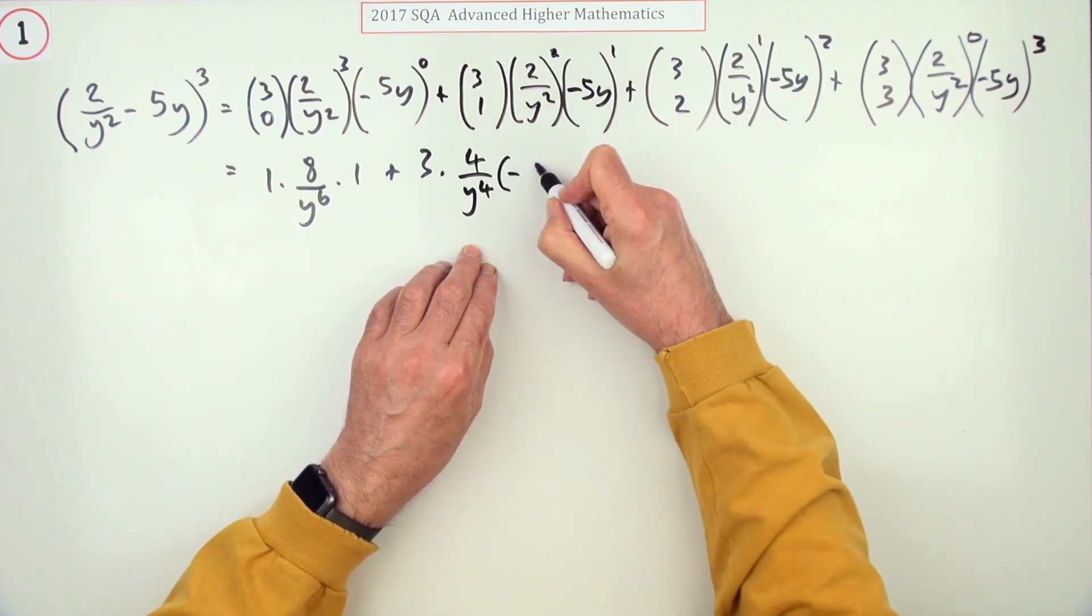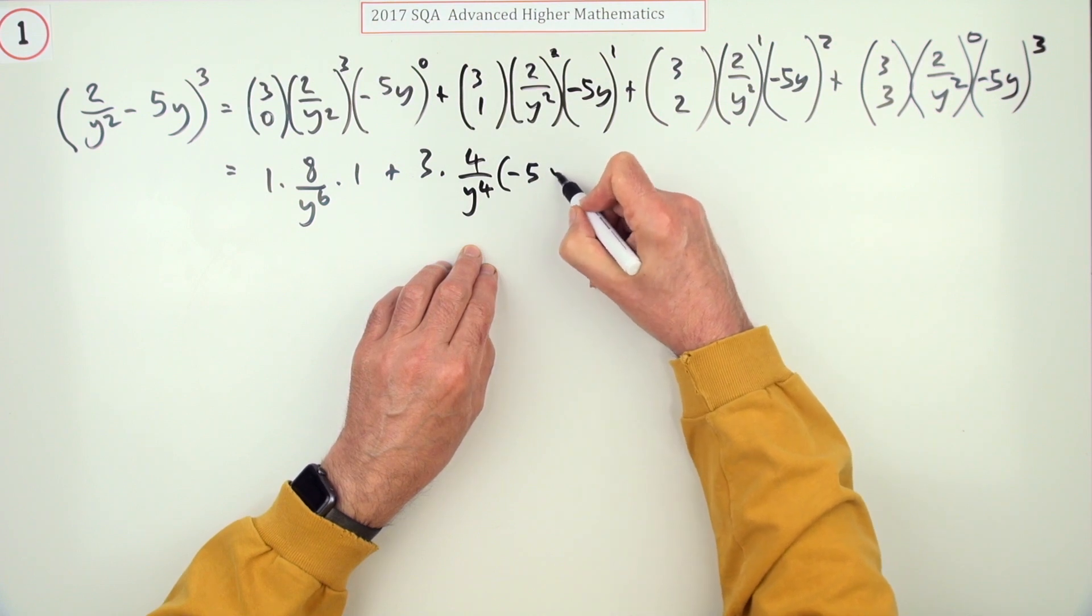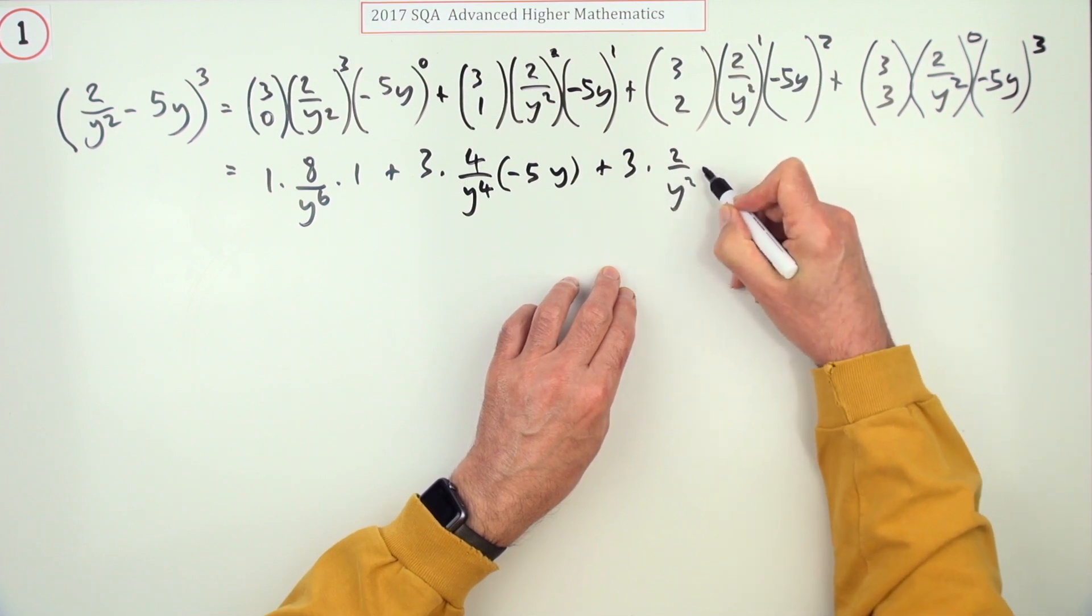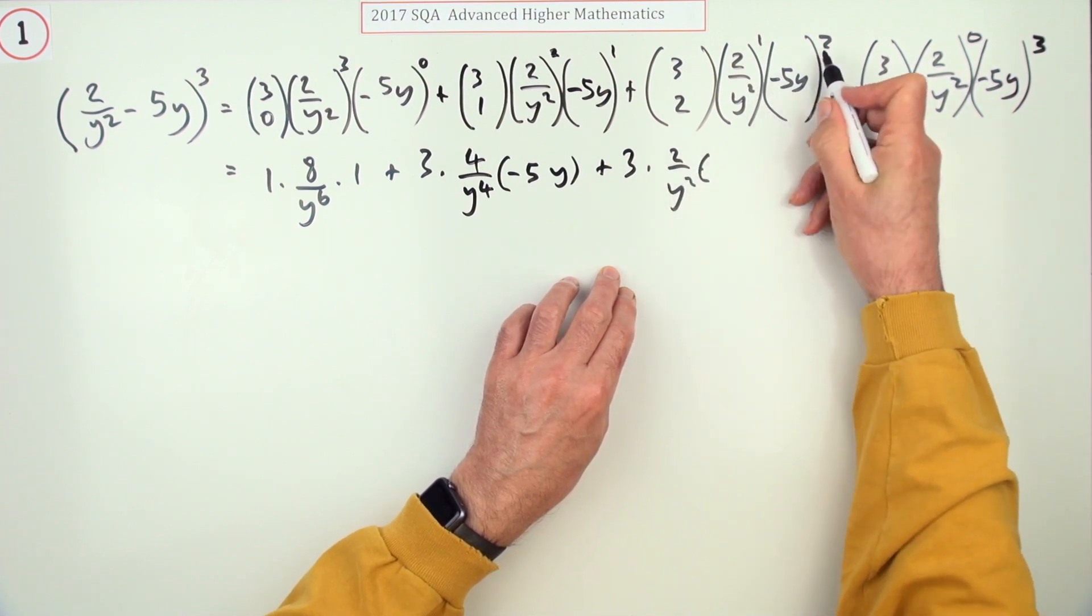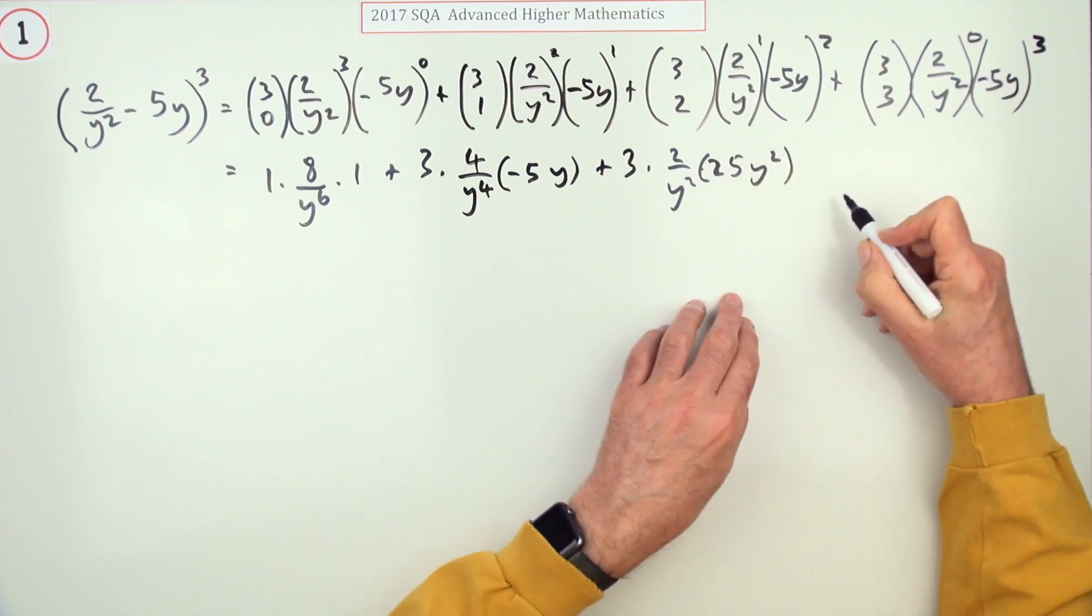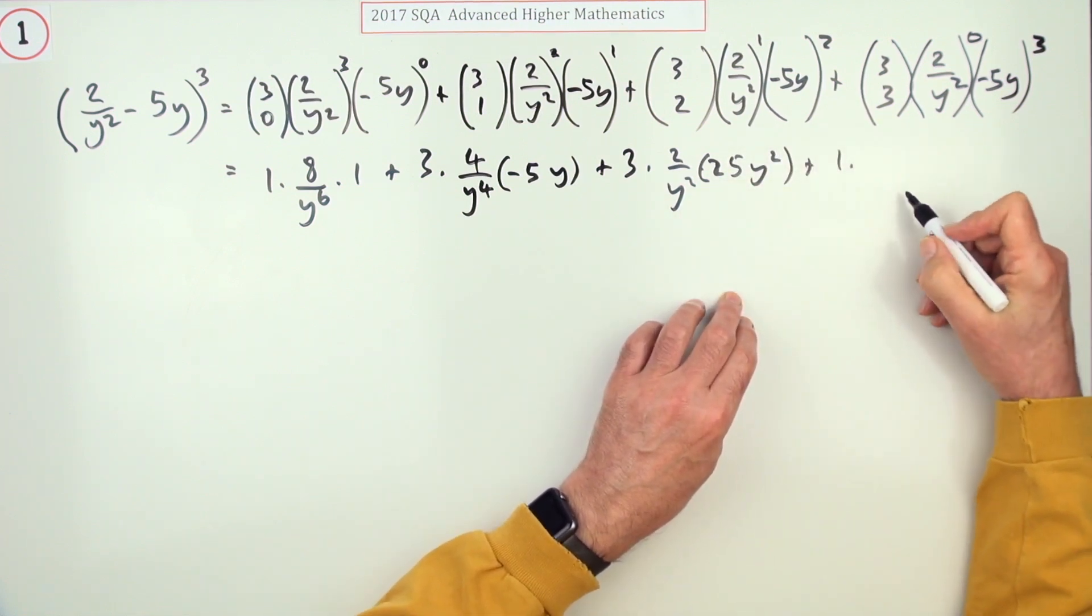Next one, still 3. Now it's down to just 2 over y², but this has gone up to 25y². And lastly, one times—now that's just a one as well because it's power zero—and that goes all the way to negative 125.